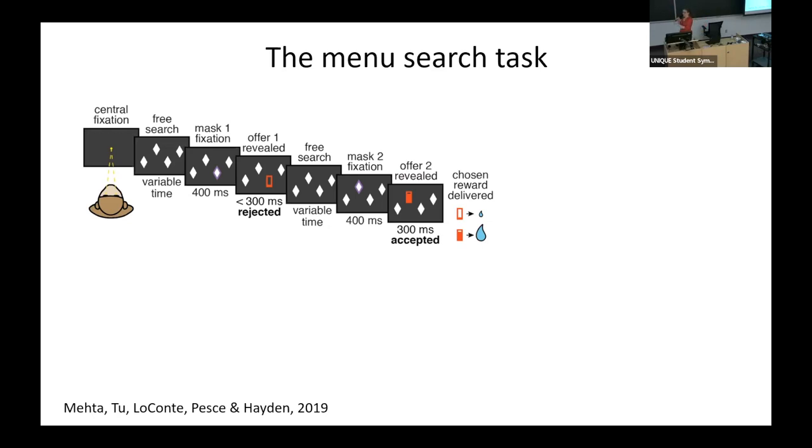And monkeys can freely investigate any other offer. So in the next example, monkey chooses a different option. And now the filled part is much bigger. So the offer is great. And monkey can accept it by just maintaining the fixation for 300 milliseconds. And of course, in this case, the reward is juice.